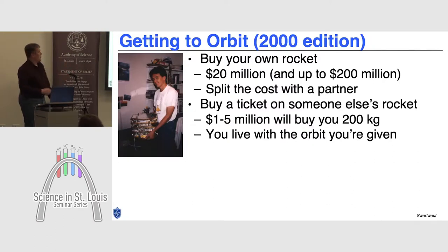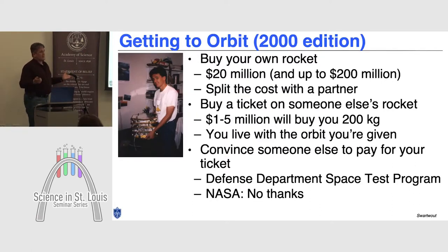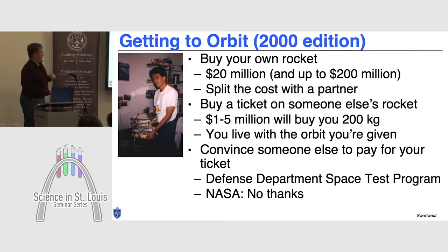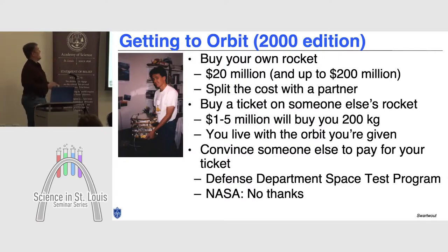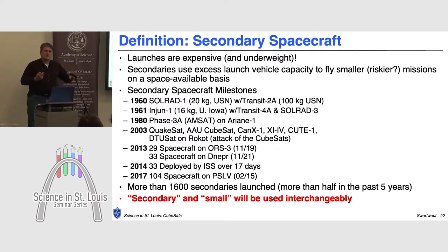One of the downsides of buying a ticket on someone else's rocket is you go wherever the rocket's going — you don't get to say 'can you hang a left?' They'll let you off where they want to. The only other option was to convince someone else to pay for your launch — ask NASA for two million dollars to launch your student satellite. They said no, they've got their own missions to fund. What we ended up doing: the Defense Department has a program called the Space Test Program. We actually donated our spacecraft to the U.S. Naval Academy, so it became a U.S. Navy spacecraft, and we were able to get launched by the Department of Defense. So this idea of the secondary spacecraft — if your program doesn't have resources or if you're a university, this was your only option.